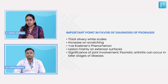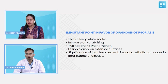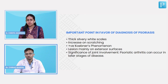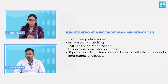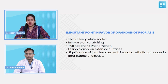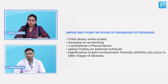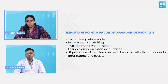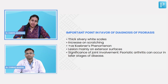Psoriasis can turn into a complication called psoriatic arthritis later in its course, so joint pain history was taken to rule that out. We have asked the history of joint pain because of associated psoriatic arthritis. I will tell you later what important features to look for in a patient of psoriatic arthritis.